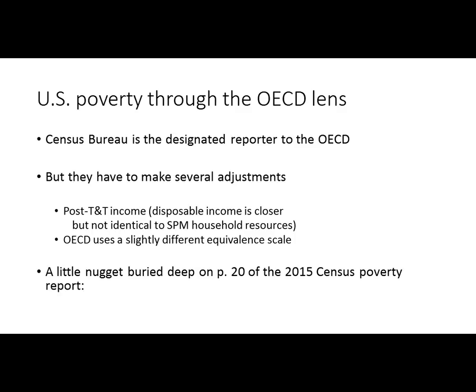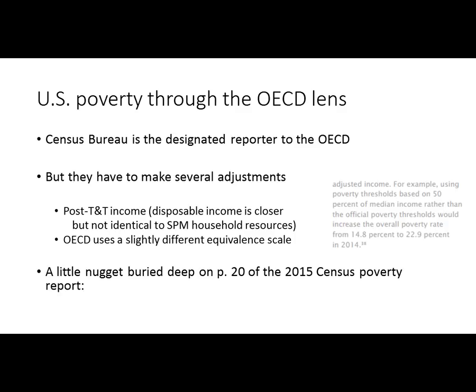But almost every year, when the official report on poverty comes out from the Census Bureau, you can find — usually way back toward the end — this little nugget: if we in the United States measured poverty the way the OECD measures poverty, our poverty rate would be about 22.9%. So much, much higher. In 2015 our poverty rate was 13.5%, and this figure from the 2014 report shows 14.8%. It would be much higher if we measured income poverty the way the OECD does.